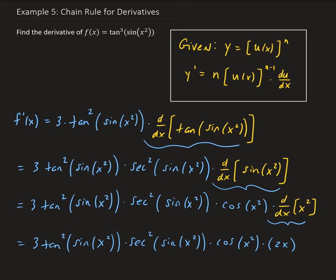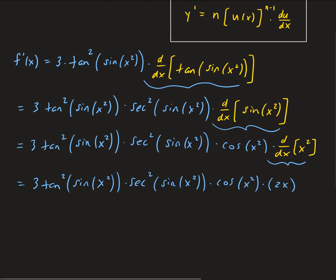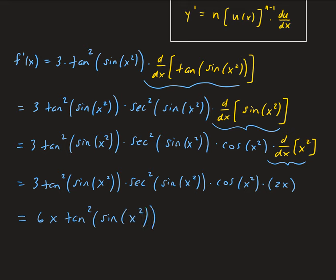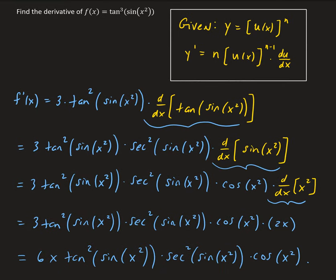We applied the general power rule three times here because we had four functions — the general rule is that with four functions you do n minus one power rules. Now simplifying: three times two gives us six, so the final answer is six x times tangent squared of sine x squared times cosine x squared. That is the derivative of our given function.